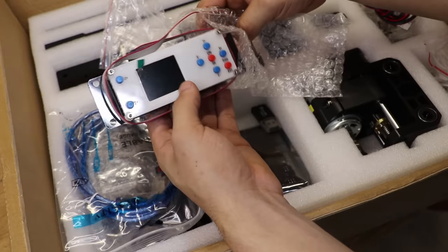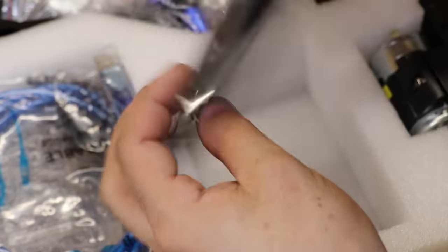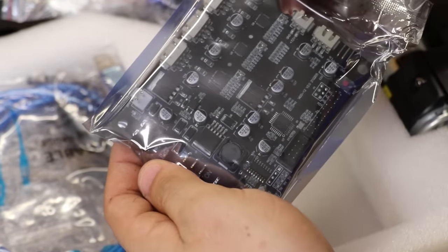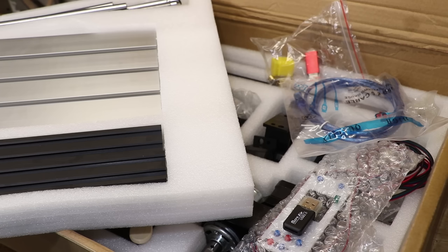This is the offline control board so we can control the CNC machine without the need for a computer, and it looks like we have the main Gerbil CNC control board. As far as first impressions go, they've done a pretty good job - everything's packed in really nicely, nothing's damaged, and it looks to be really well made.